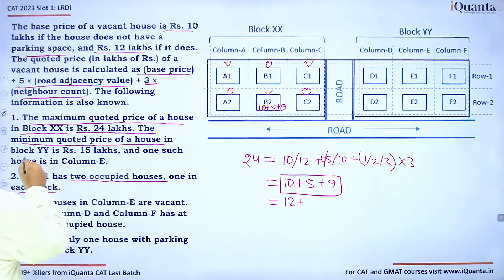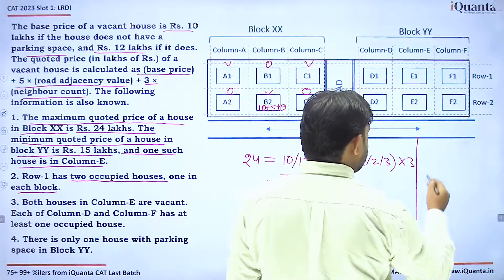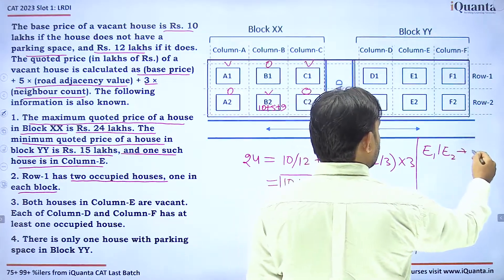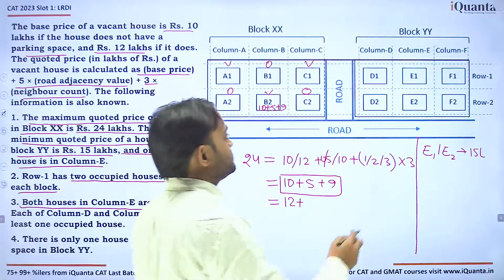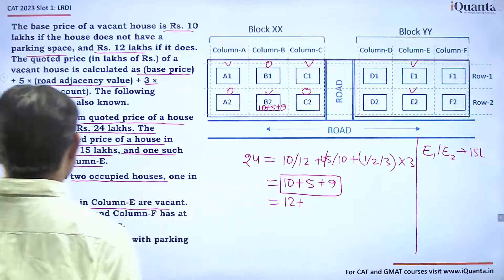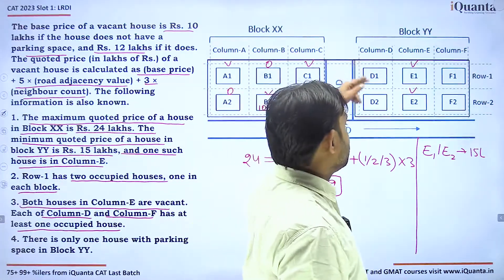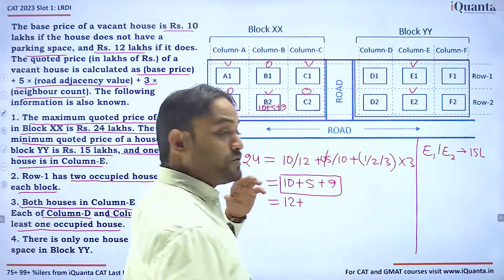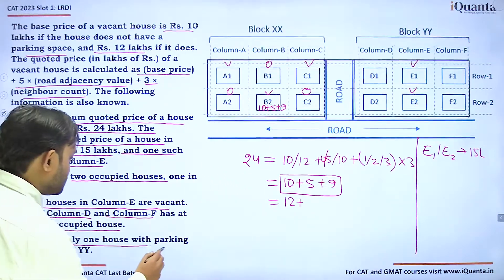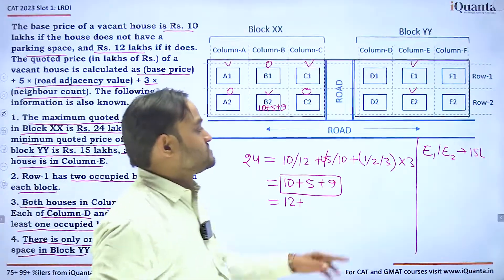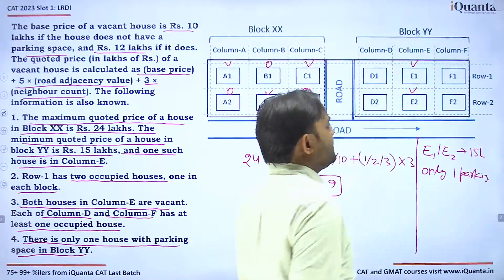The minimum quoted price of a house in Block YY is 15 lakhs, and one such house is in Column E. Both houses in Column E are vacant — E1 and E2. Each of Column D and Column F has at least one occupied house. There is only one house with parking space in Block YY.